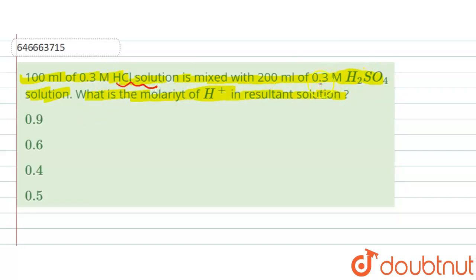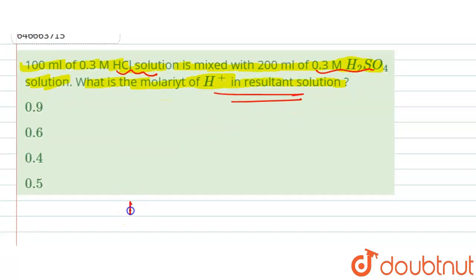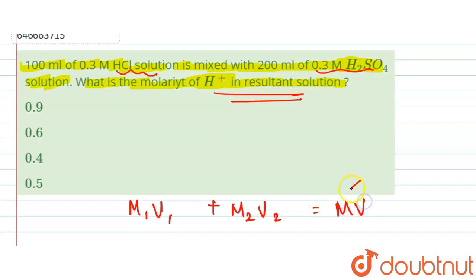We are given two solutions and we need to find the resultant molarity. We will use the formula M₁V₁ + M₂V₂ = MV, where MV represents the final solution.